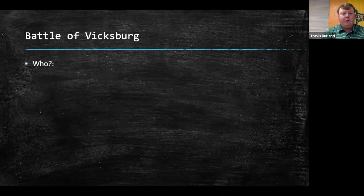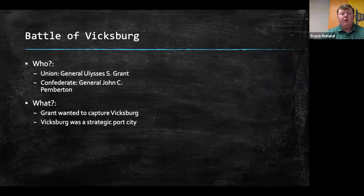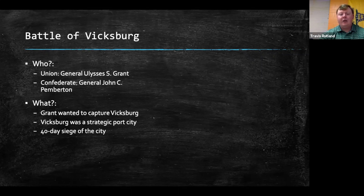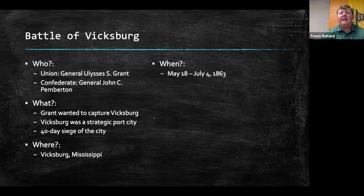The Battle of Vicksburg featured Union General Ulysses S. Grant, and on the Confederate side, General John C. Pemberton. Grant wanted to capture Vicksburg because it was a strategic port city on the Mississippi River. This led to a 40-day siege of the city — surrounding it, cutting off supplies going in and out, and making people wait it out. This battle took place at Vicksburg, Mississippi, from May 18th to July 4th of 1863.